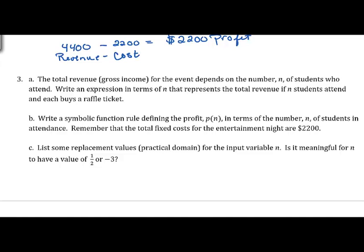The total revenue or gross income for the event depends on the number of students N who attend. We want an expression in terms of N representing total revenue if N students attend and each buys a raffle ticket. That's $10 for admission and $1 for the raffle ticket, so the expression for revenue is 11N.